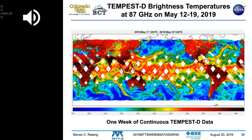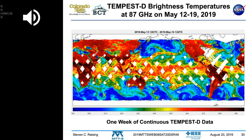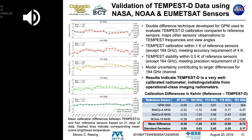That's an entire week of Tempest D data from a small CubeSat on orbit. The next question was: how well did we do? How accurately do we measure?